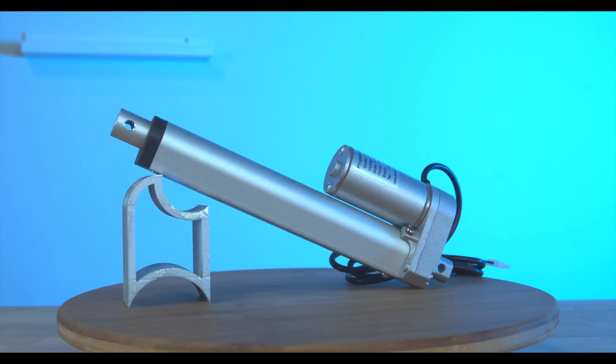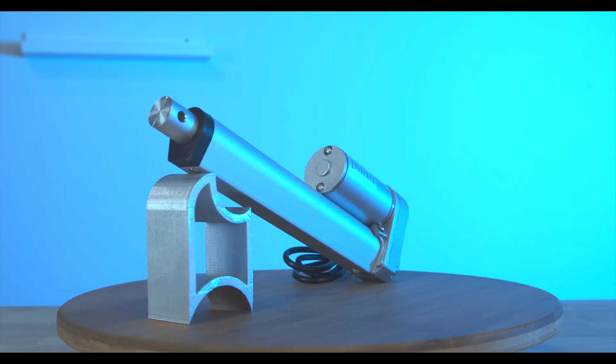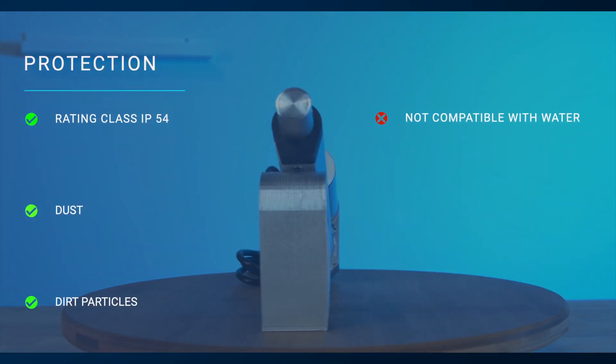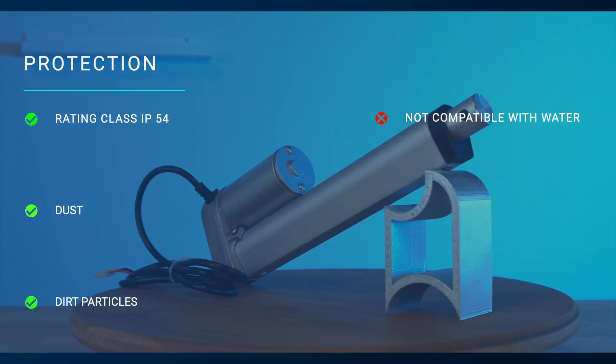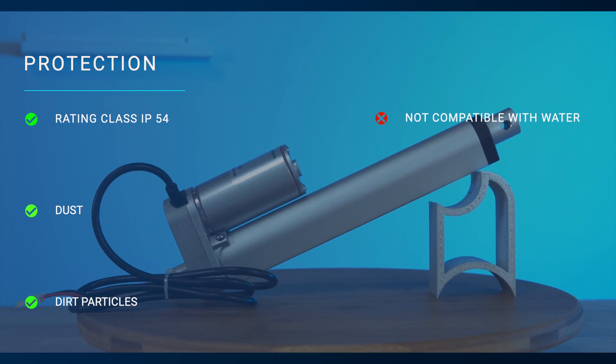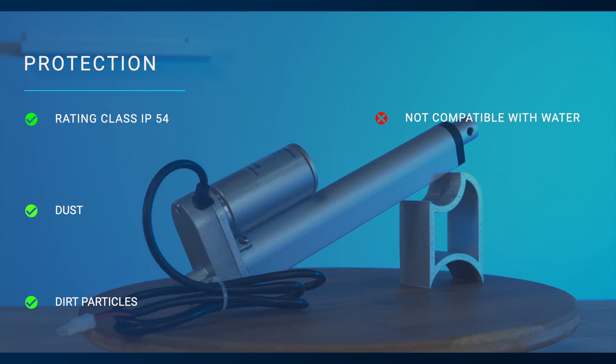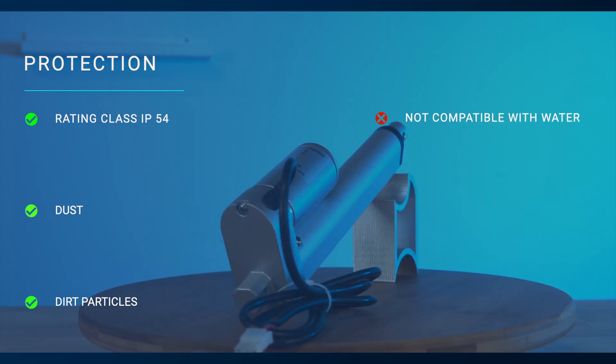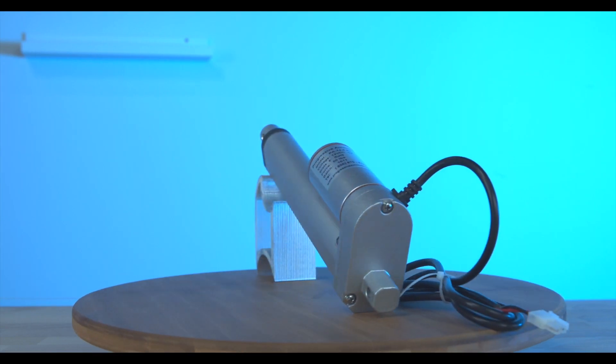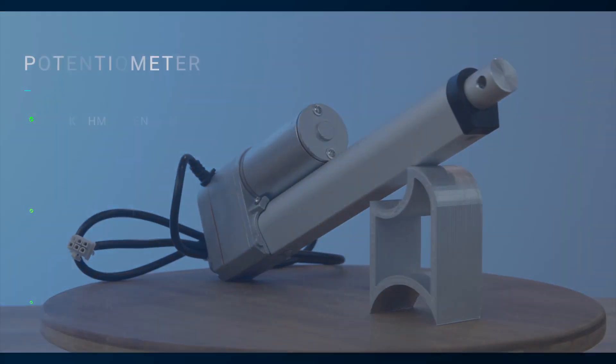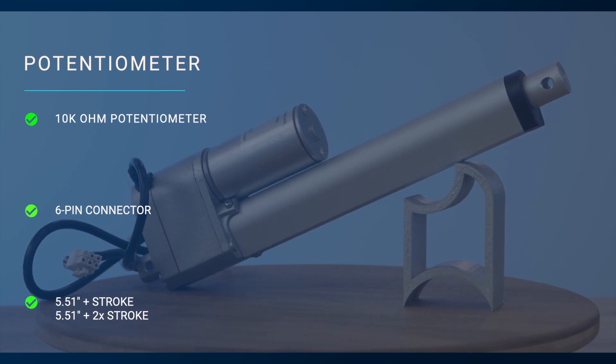Ensuring your actuator has the right amount of protection for its requirements is essential. The PA14 has a protection rating class of IP54, which is effective against dust and dirt particles but not compatible with water. Its IP54 rating can be customized and improved to IP65 when needed.